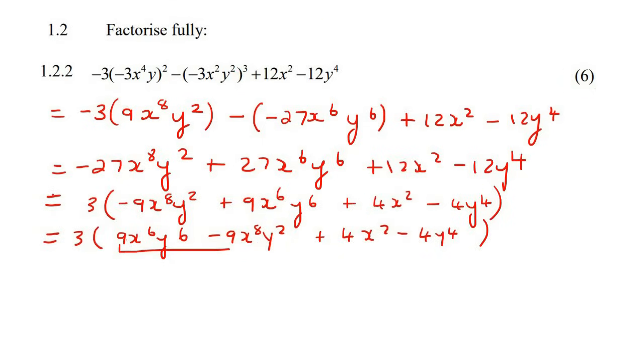If we start here, we can definitely take out a common factor there. That common factor would be 9x6 y2. And what would you have left? Well, over here, you would only have a y4 left over. And then over here, there would only be an x2 left over.